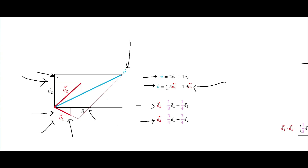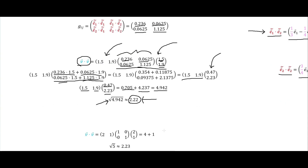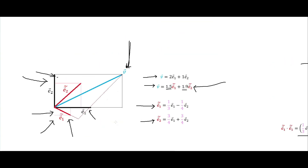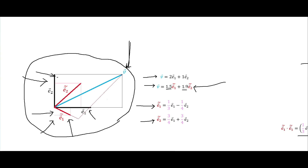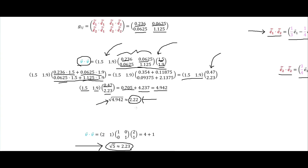Taking the square root of 4.92 gives 2.22, which is the length of vector v. When we compute the same thing using the orthonormal basis we get approximately the same result. The small discrepancy is because the components were read off the graph by eye — measured more precisely, both approaches would give exactly the same length.